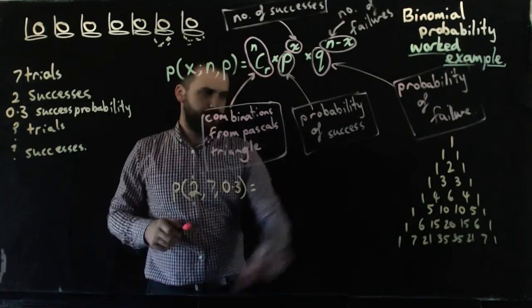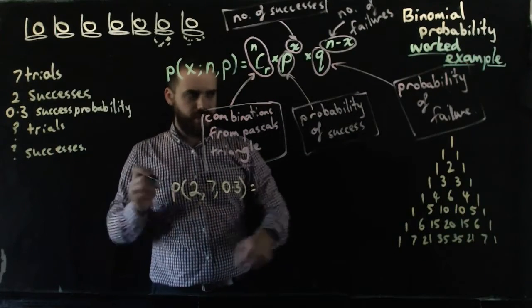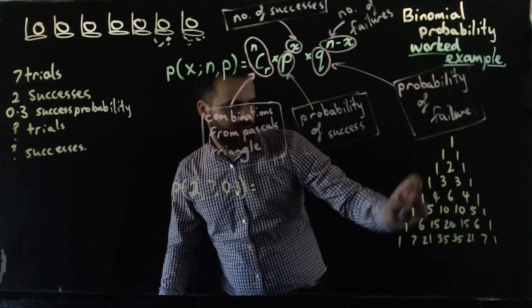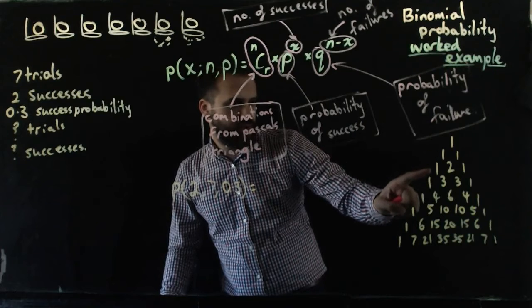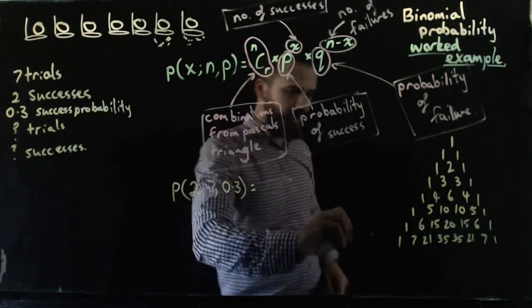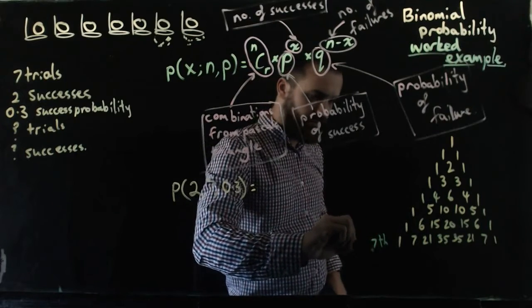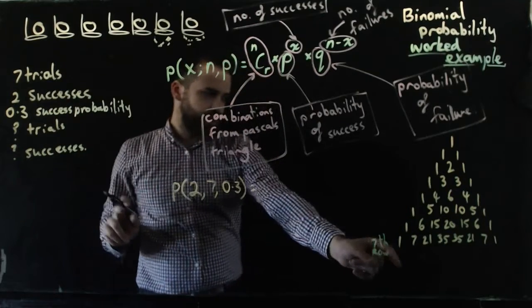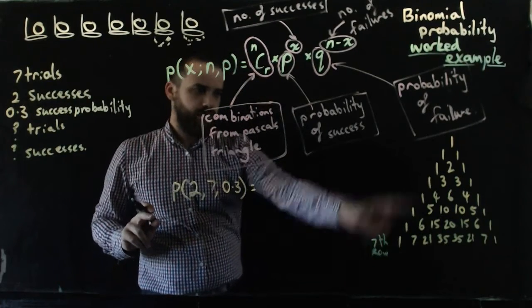Here's Pascal's triangle on the right hand side. Zero row, one row, two row, three row, four row, five row, six row. This is the seventh row here. So because we're doing seven trials, we need to be in the seventh row.